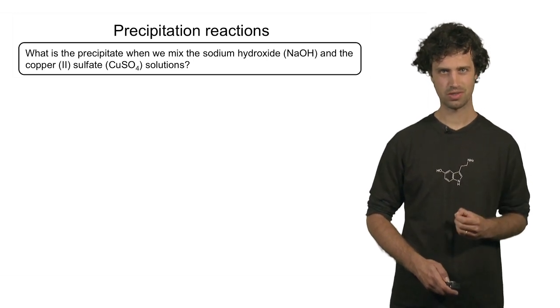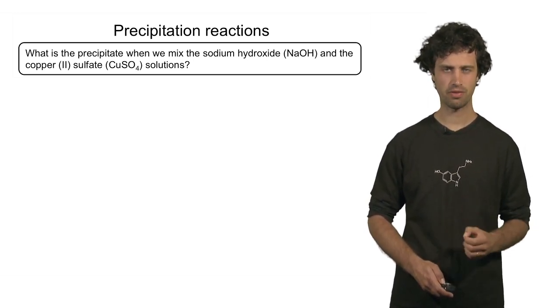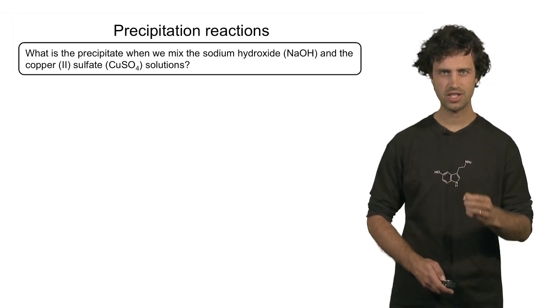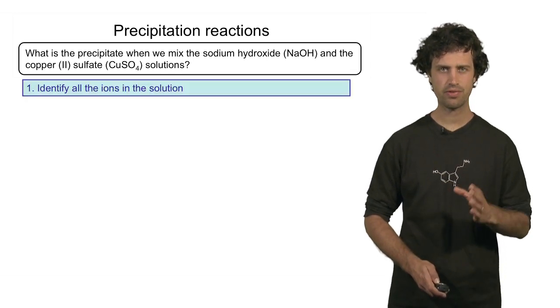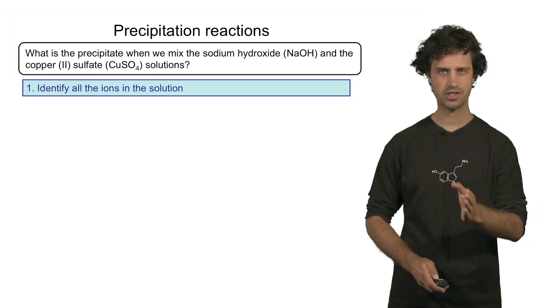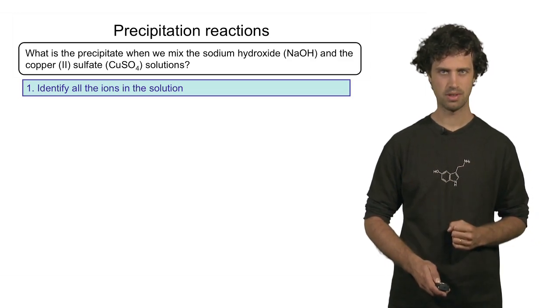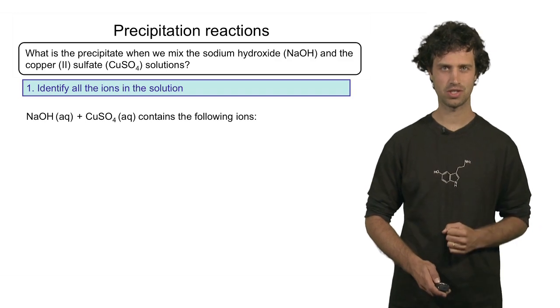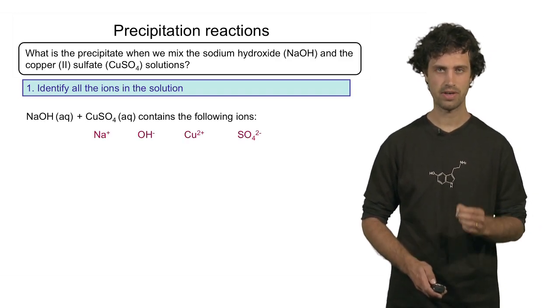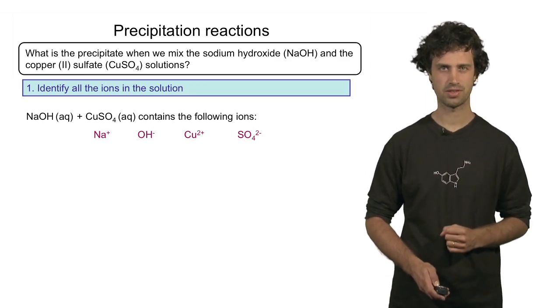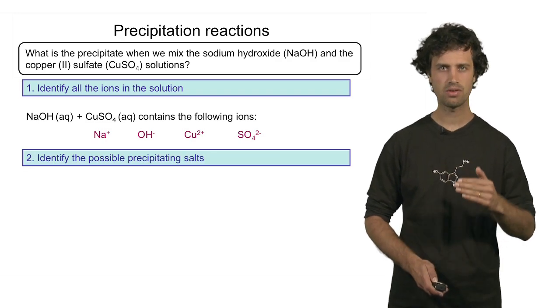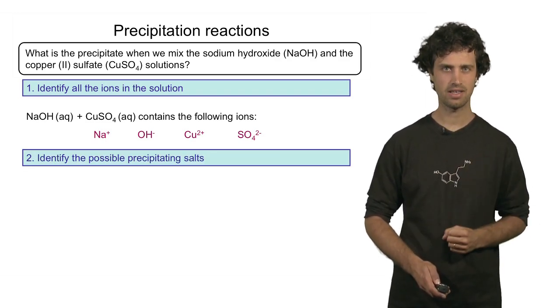Using the information from this table, we can now solve the precipitation problem. We started out with two solutions, sodium hydroxide and copper sulfate. Now let's try to find out what is the precipitate that is formed in this reaction. In order to do that, the first step we take is to identify all the ions that are present in solution. These two starting materials produce the following ions in solution: sodium ions, hydroxide anions, copper(II)+ ions, and sulfate anions.